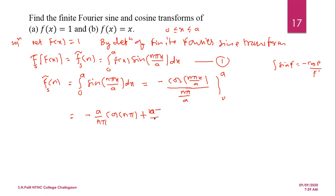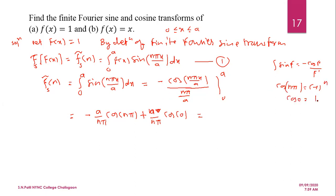Putting in the upper limit x = a, the a cancels and we get cos(nπ). For the lower limit x = 0, we get cos(0). We know that cos(nπ) = (−1)^n and cos(0) = 1.